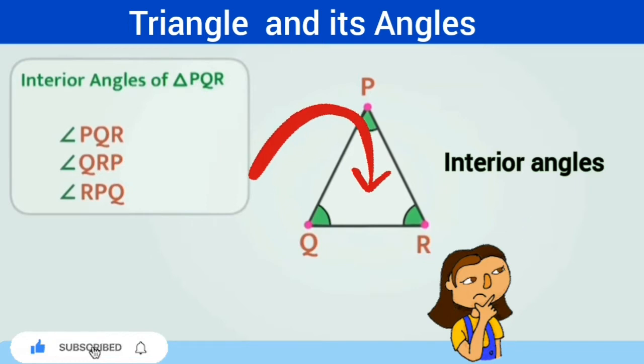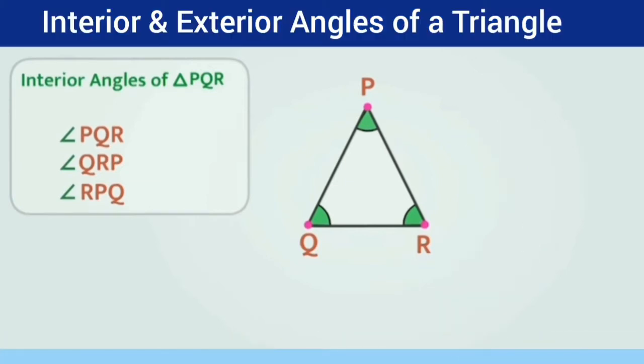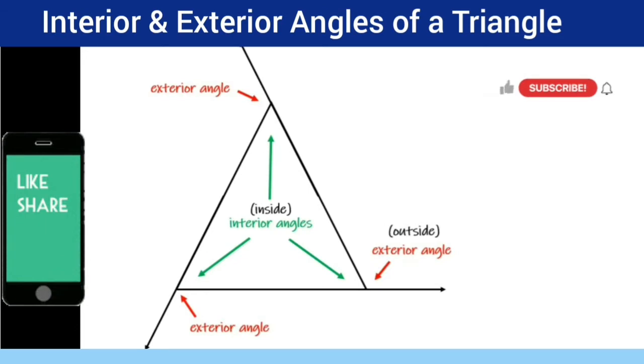Now you must be thinking, does the triangle have exterior angles? Yes, triangles have exterior angles too. Let's see how we can get the exterior angles. By extending the sides, you get exterior angles.